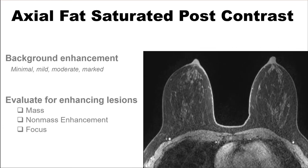Next, evaluate the amount of background enhancement. The categories are minimal, mild, moderate, or marked background enhancement. Remember, this is different than the amount of fibroglandular tissue. Finally, evaluate for any enhancing lesions. You're looking for a mass, non-mass enhancement, or a focus of enhancement.